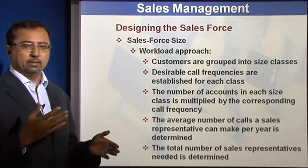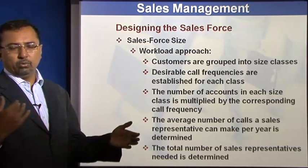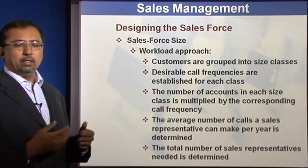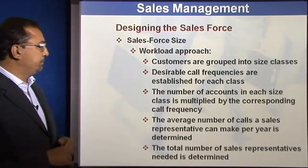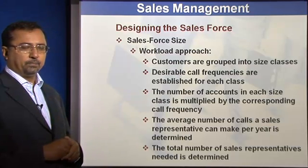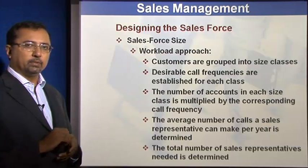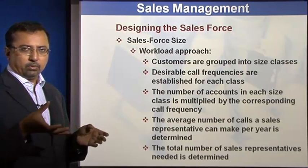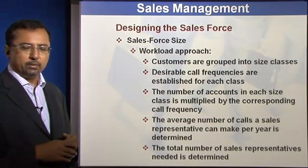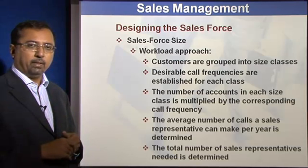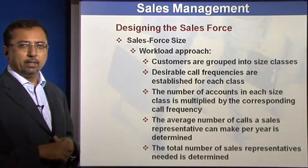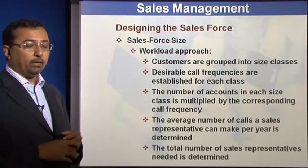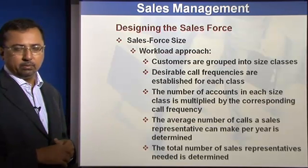The call frequency can be very different depending on the product. Selling a consumer durable like a washing machine differs from selling large power equipment or a backhoe loader. If you contact customers too often in some of these cases, they may get quite irritated. The number of accounts in each size class is multiplied by the corresponding call frequency. For household consumer durables, accounts may be relatively small, while a large power plant may be a huge account requiring several people to handle it.